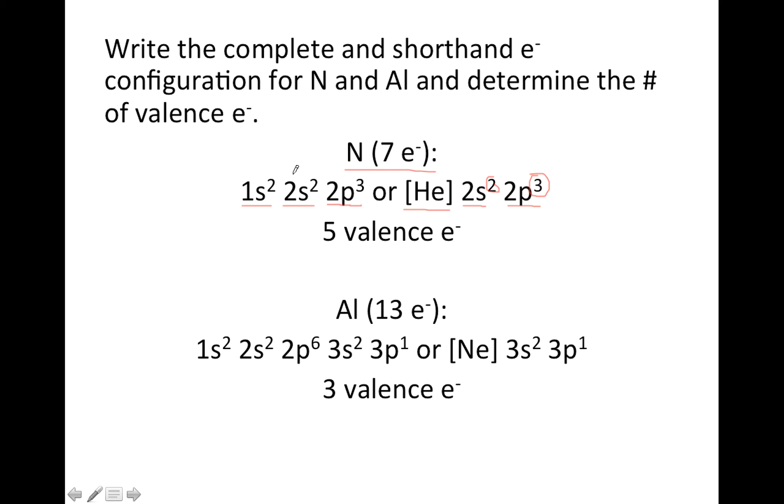In terms of valence electrons, remember valence electrons are the ones with the highest n value, so both the ones in the 2s and the 2p are called valence electrons, so if you add all that up, you get 5 valence electrons.